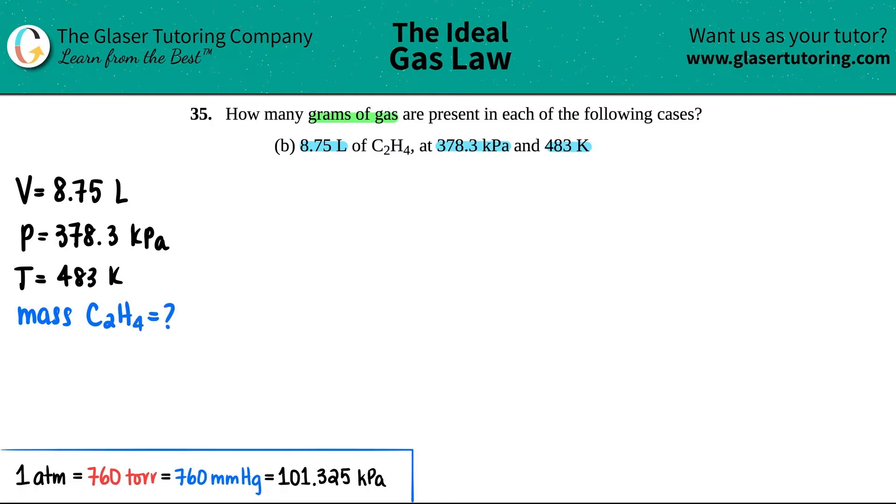There's a lot of different formulas for the gas chapter. Remember, if you only have one variable of each and you don't have doubles, meaning you don't have two volumes or two pressures or two temperatures, you're dealing with the ideal gas equation which is PV equals nRT.